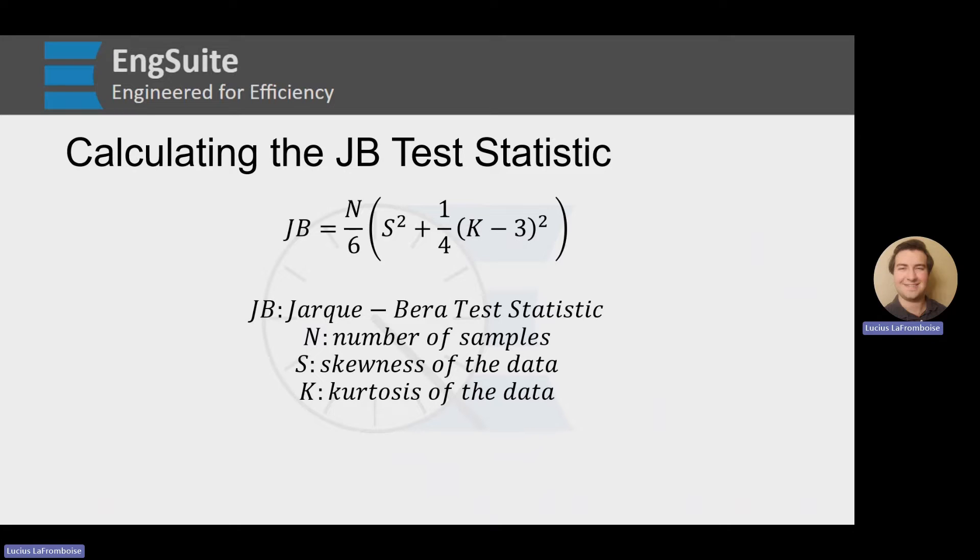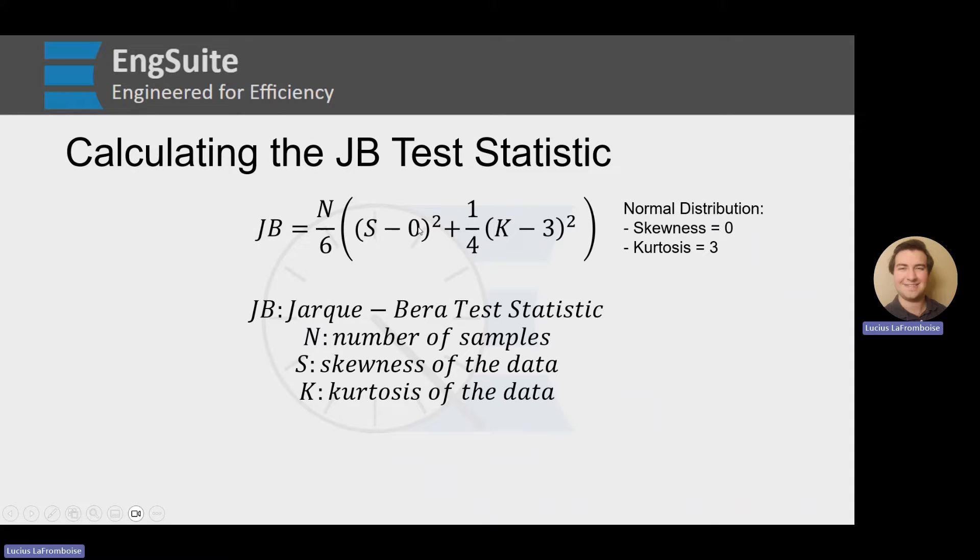Now, if you remember, the whole purpose of the Jarque-Bera test is to calculate the excess skewness and excess kurtosis, and that's actually what this k minus 3 is. 3 is the known kurtosis of the normal distribution. So if we put in the skewness of the normal distribution, which is 0, you see that the skewness is being adjusted here, and so is the kurtosis. It's just because it's 0, we don't have to show that in the equation.